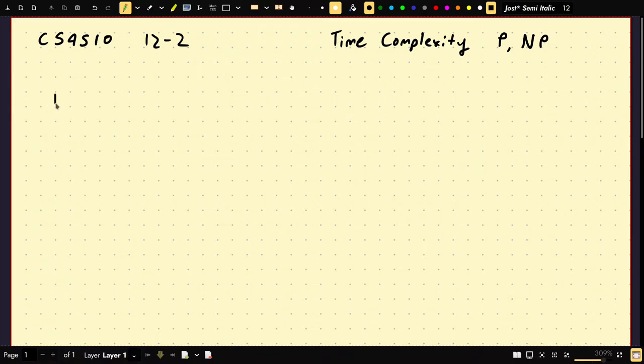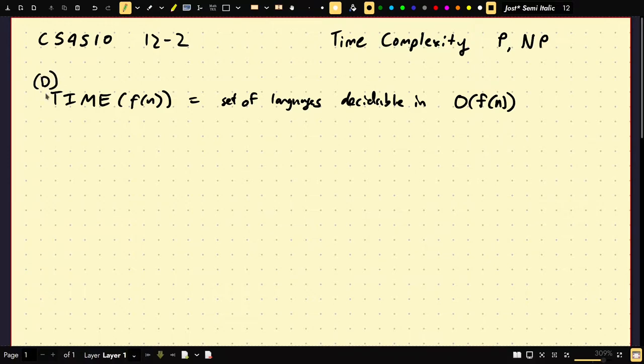First, let me go ahead and define what these are. Last time, if you recall, we said TIME(F(N)) is equal to the set of languages decidable in O(F(N)). Another way sometimes people write this is DTIME, and D here is for deterministic because the model is a deterministic Turing machine. I can define P to be the union for all K of DTIME(n^K) for K equals 1 to infinity. So this is the set of all languages decidable in polynomial time.